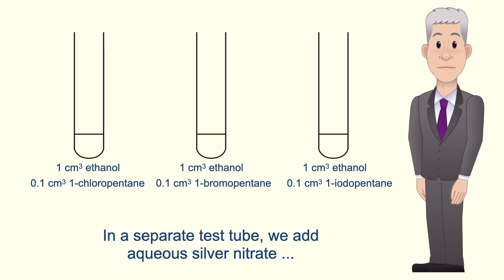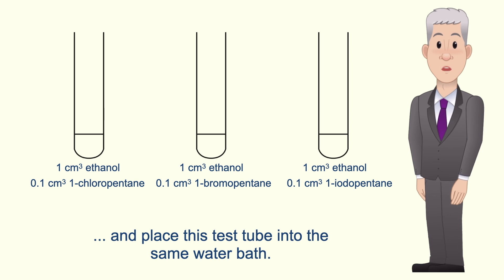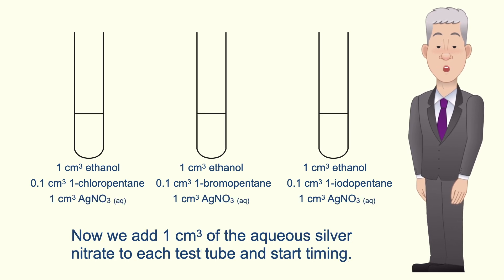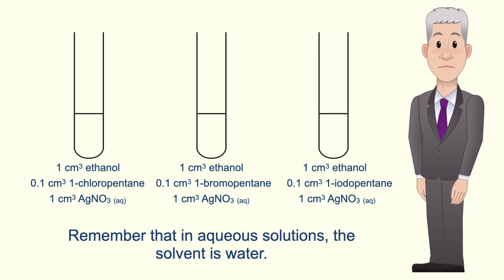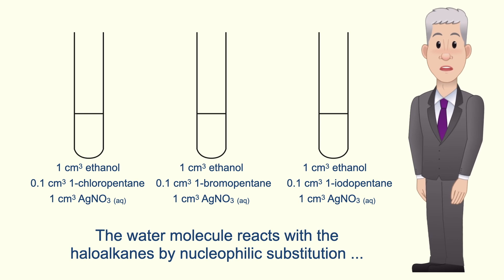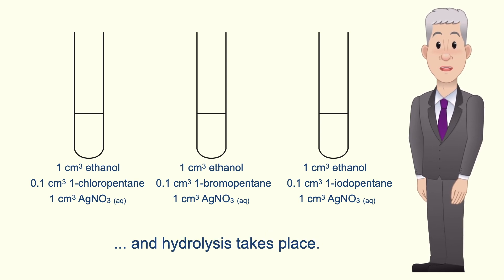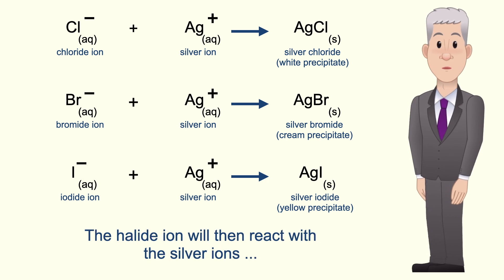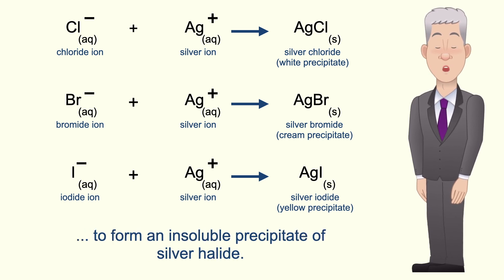In a separate test tube we add aqueous silver nitrate and place this test tube into the same water bath. We now wait for 10 minutes for all of the solutions to reach the same temperature. Now we add 1 cm³ of the aqueous silver nitrate to each test tube and start timing. Remember that in aqueous solutions the solvent is water, and water is a nucleophile. So the water molecule reacts with the haloalkanes by nucleophilic substitution and hydrolysis takes place. During hydrolysis the halide ion will be released from the haloalkanes.